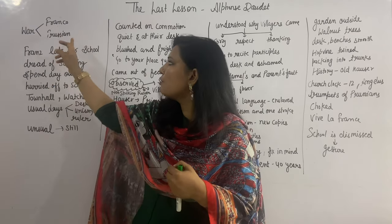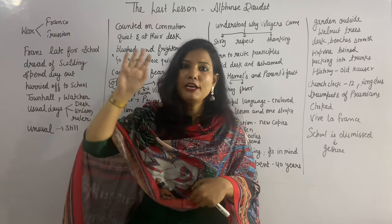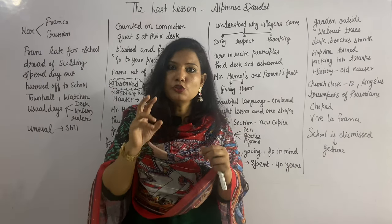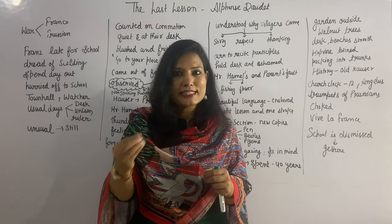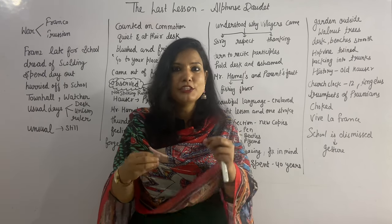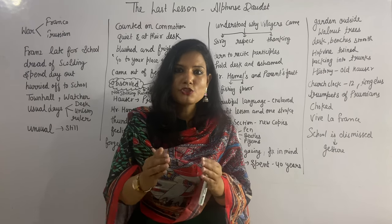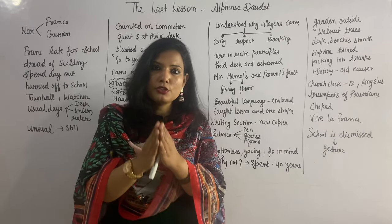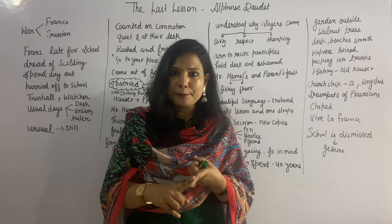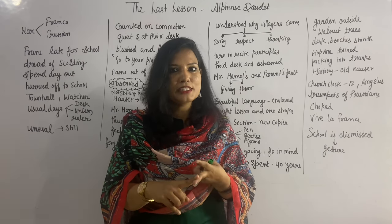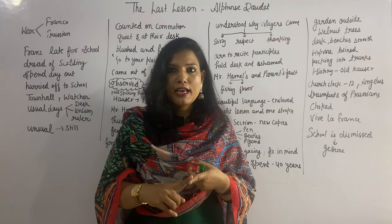Under Bismarck's rule, the Franco-Prussian War happened — 'Franco' means France, 'Prussian' means Prussia, modern-day Germany. The Prussian people defeated France, and two districts of France — Alsace and Lorraine — passed into the hands of Prussia. In this chapter, you will encounter two main characters: Mr. Hamel and Franz.